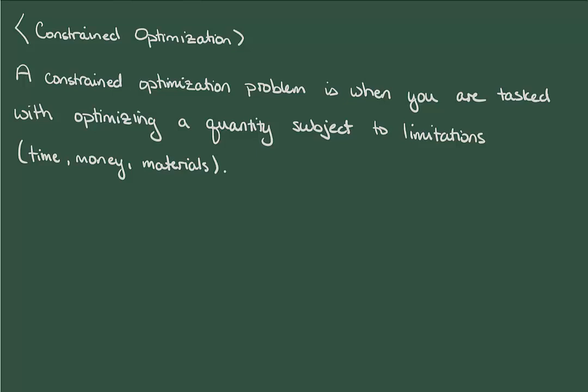Most optimization problems which occur in real life have some sort of constraint attached to them. Often these constraints are things like time, money, or materials. Our goal is to determine how to solve such problems with the tools at our disposal.